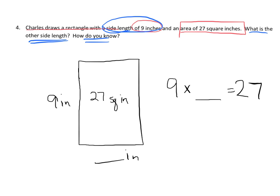Now what that tells us is the multiplication sentence would be 9 times something is equal to 27. Or, if we wanted to, we could write it as a division sentence: 27 divided by 9 equals blank. And in both cases, we can see that the missing number is 3, because 9 times 3 is 27. So that means this missing side length right here is 3.